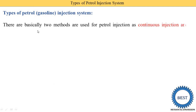The two basic methods used for petrol injection are continuous injection and timed injection. From the name we can understand: if petrol is injected continuously, it is known as continuous injection. If petrol is injected at a particular time, it is known as timed injection.